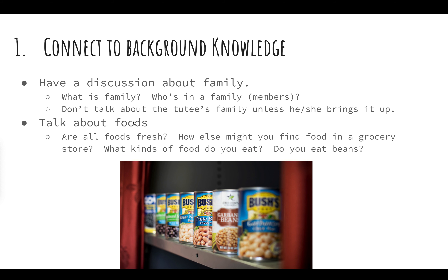For the film that we're going to discuss, the next part would be to talk about foods, because really the two main ideas are about family and food. So you could ask questions like: are all foods fresh? How else might you find food in a grocery store? How are these foods prepared? They're prepared in a can — you can find them frozen or in plastic bags, in the cooler section. What kinds of food do they eat? And then because this is a film that really addresses beans, you should ask them specifically about beans.